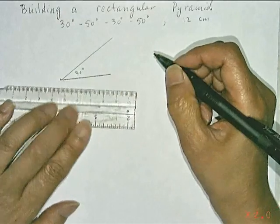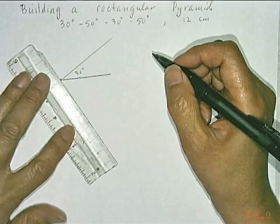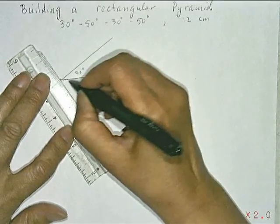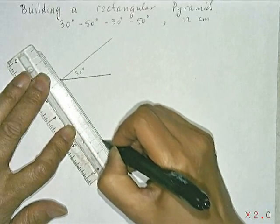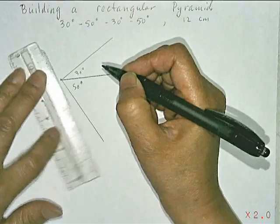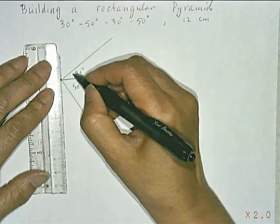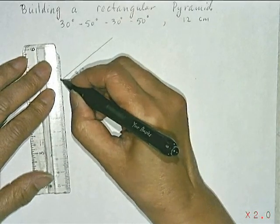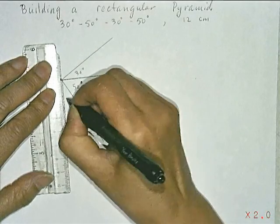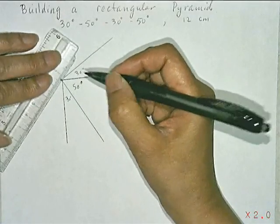And then you're going to measure and do a 50 degree angle. In this case, then a 30 degree angle, that's the same size as the first one. And then you're going to repeat a 50 degree angle.